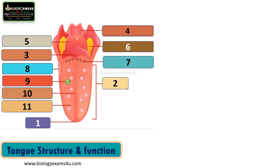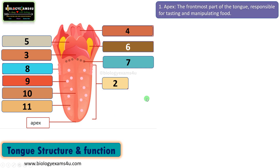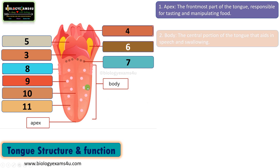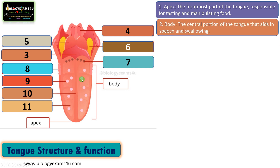The first part is the apex. The apex is the frontmost part of the tongue that is responsible for tasting and manipulating food. The second part is the body. It is the central portion of the tongue that aids in speech and swallowing.